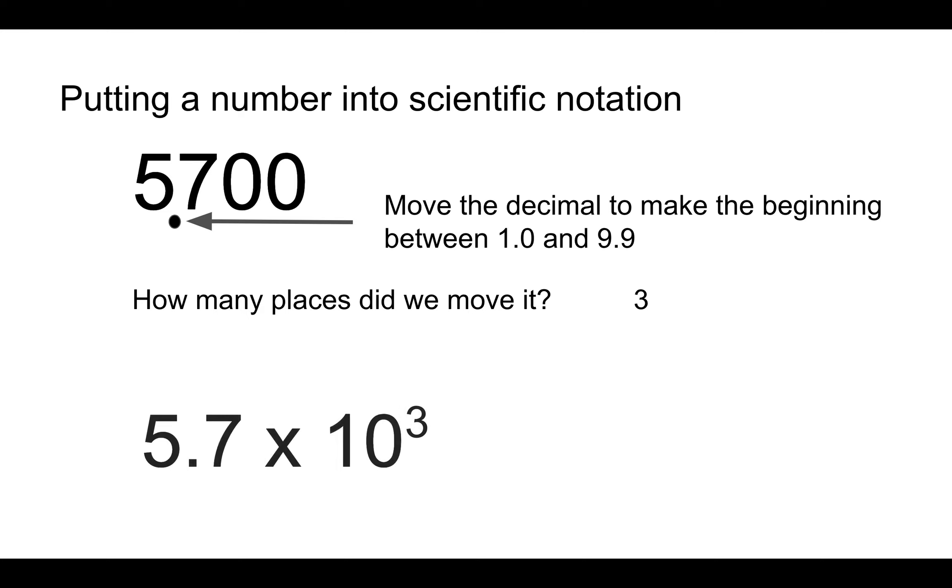So we come up with this 5,700 being in scientific notation as 5.7. Again, that's between 1.0 and 9.9 times 10 to the third. And the third comes from the fact that we moved the decimal three places.